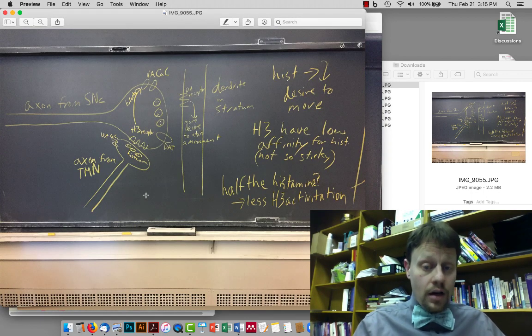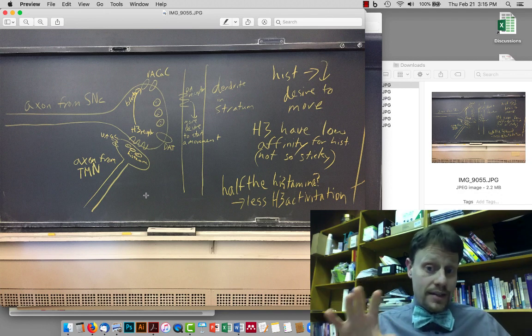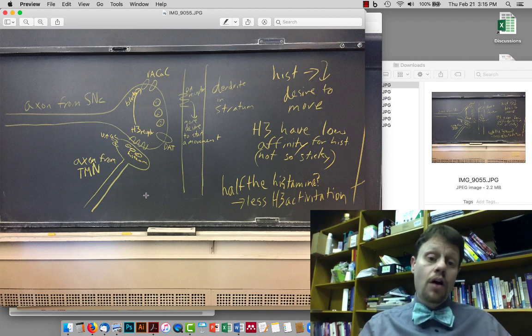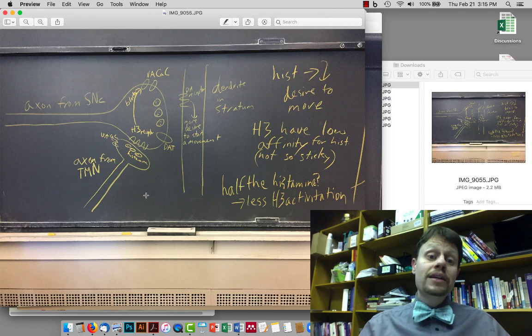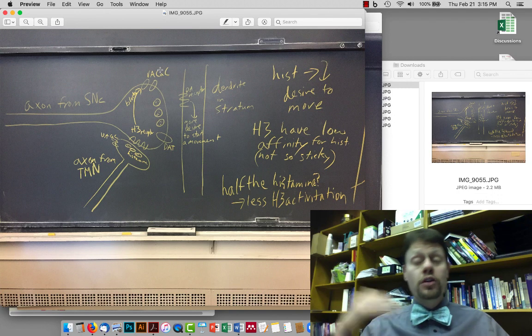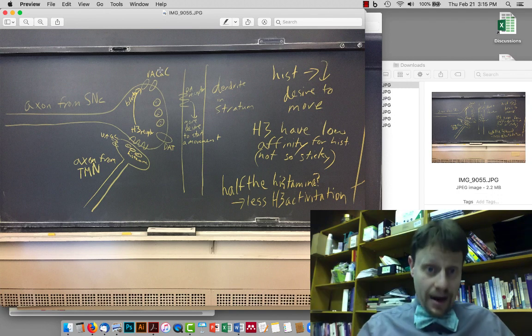But over here, if we make half as much histamine, because our H3 receptors are not very sticky, then now all of a sudden a lot fewer of them are active, which means there's now less suppression of dopamine, so that means more dopamine is released, and that means more desire to move.